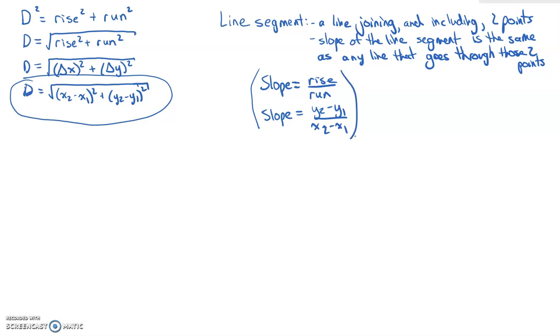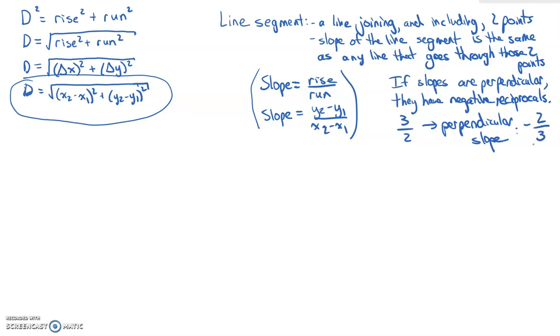Remember as well that if slopes are perpendicular, they have negative reciprocals. So what that means in this case is if I have a slope of 3 over 2, the perpendicular slope would be negative 2 over 3. So it's the negative and you flip the fraction.